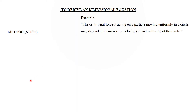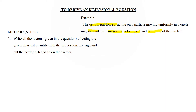Today we will learn how to derive a dimensional equation. We'll understand the method with an example: centripetal force. The centripetal force acting on a particle depends on mass, velocity, and radius. The first step is to write all the factors affecting the given physical quantity with a proportionality sign and assign powers a, b, and c.